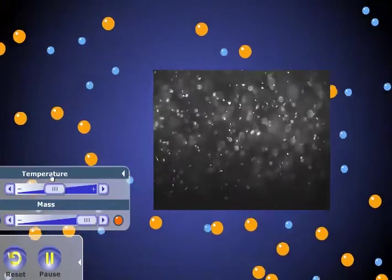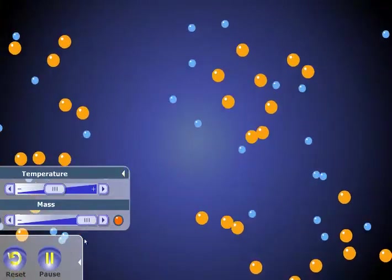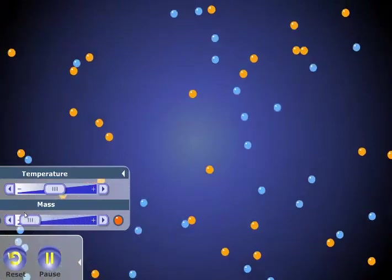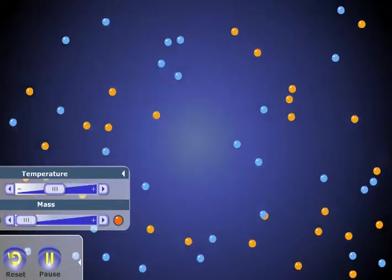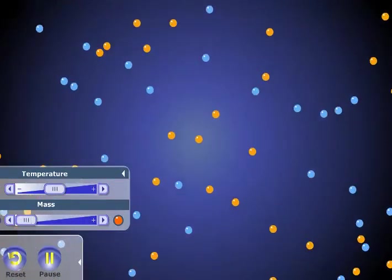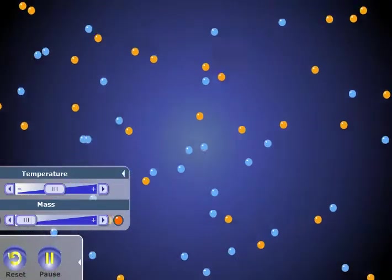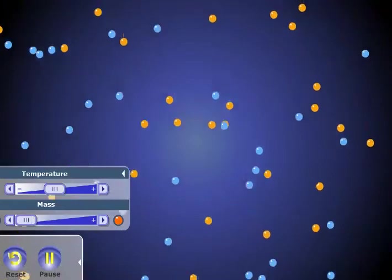So the decrease in size, if we change the size of those orange balls back to the size of the blue, they look like they're moving at the same speed because they're the same mass. And they'll collide into each other as a part of the random movement.